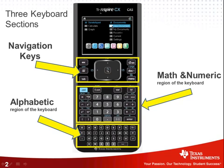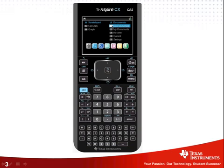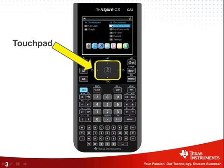If it has a CAS — the Computer Algebra System — the TI-Nspire CX CAS is allowed on the PSAT, SAT, and AP exams. Another reason why it's allowed on those exams is because it's a touchpad. Slide your finger across this touchpad and you'll see a mouse appear, and then you can click in the middle. It's not a touchscreen, otherwise it wouldn't be allowed on those exams, so you don't need to get fingerprints on your screen.